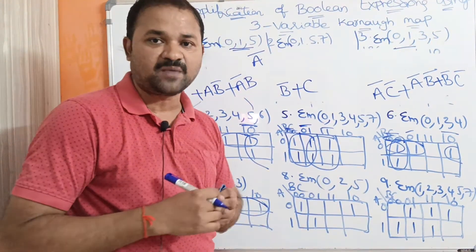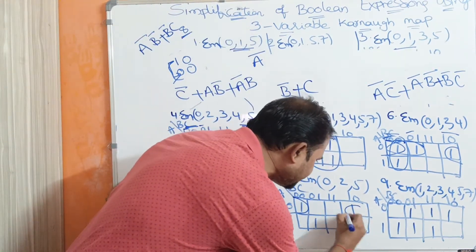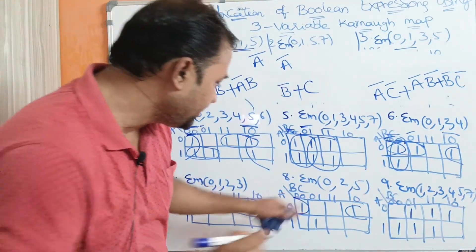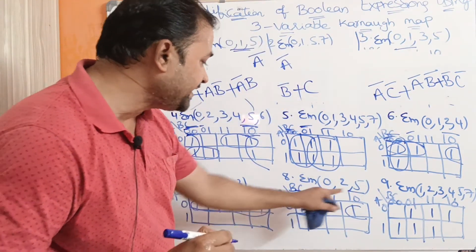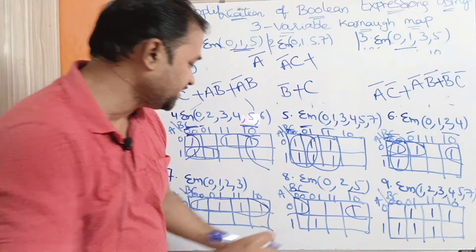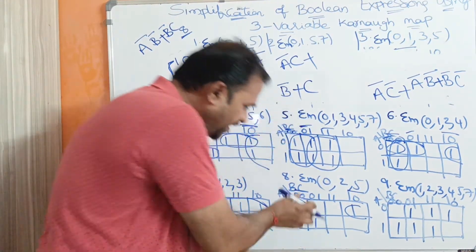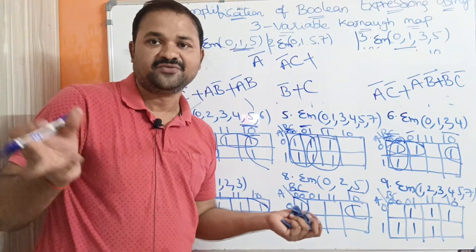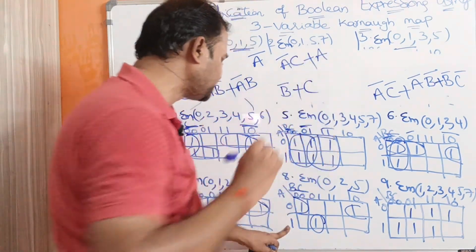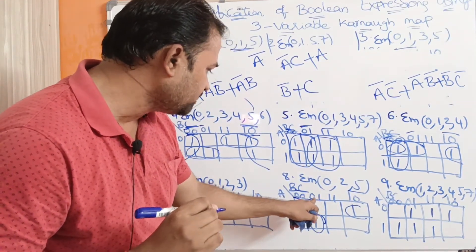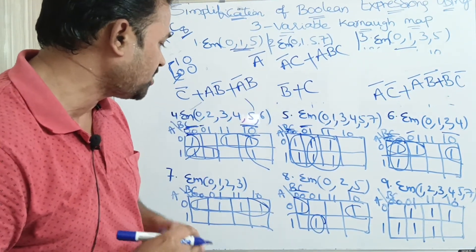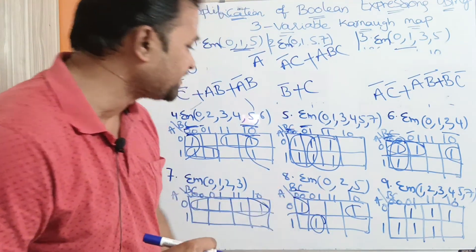Problem 8: ΣM(0, 2, 5). We group the opposite cells 0 and 2 as a pair: A is 0 (A-bar), B changes (neglect), C is common 0 — term: A-bar C-bar. Wait — C is 0, so term is A-bar C-bar. Minterm 5 cannot be grouped diagonally. So we write it as a single group: A is 1, column is 01 meaning B-bar C. The simplified expression is A-bar C-bar + A B-bar C.